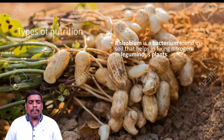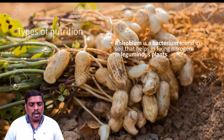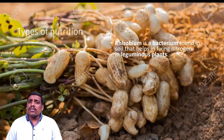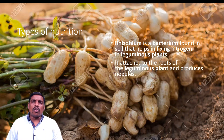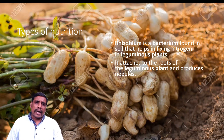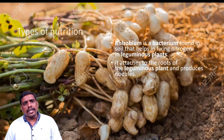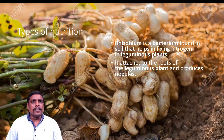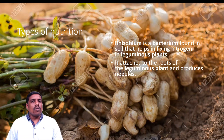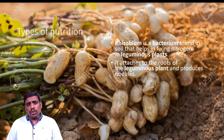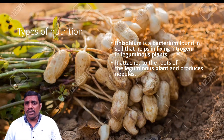Rhizobium is a bacterium found in the soil that helps in fixing nitrogen. Rhizobium shows a symbiotic relationship with leguminous crops. Let us find out what leguminous crops are and how this bacterium benefits them.